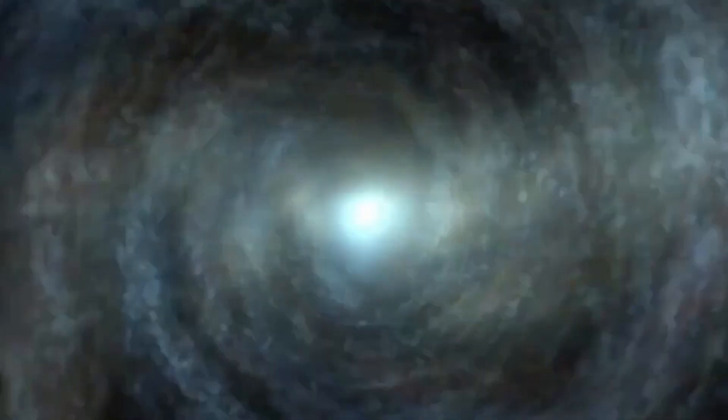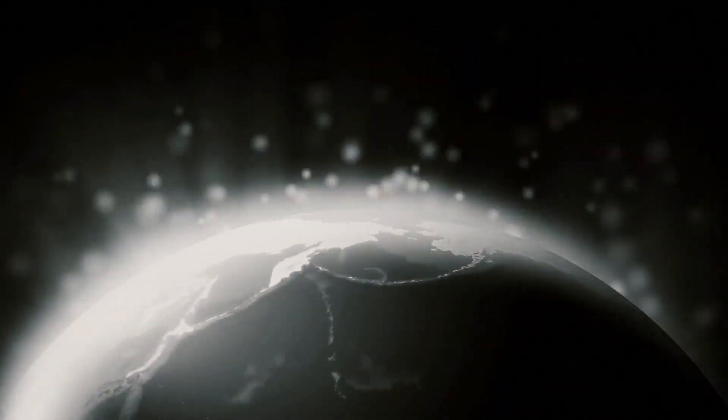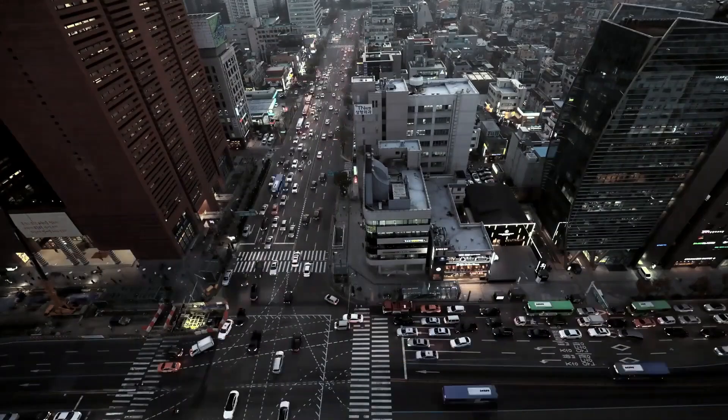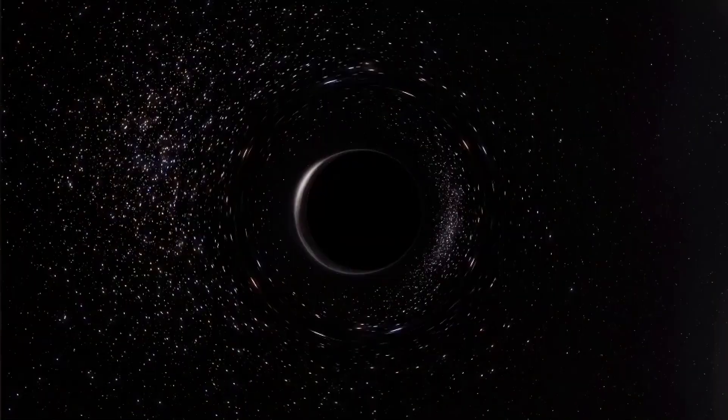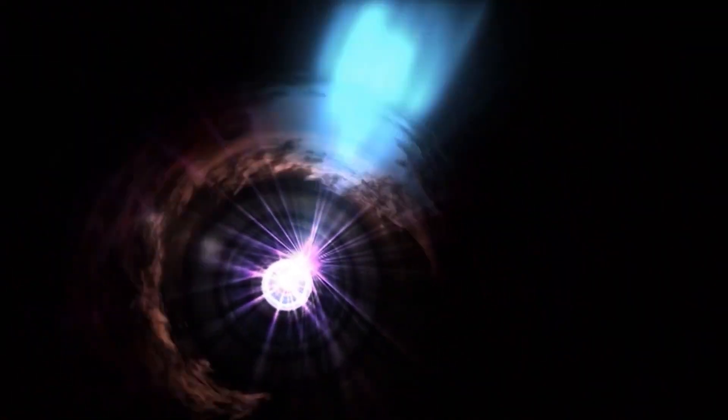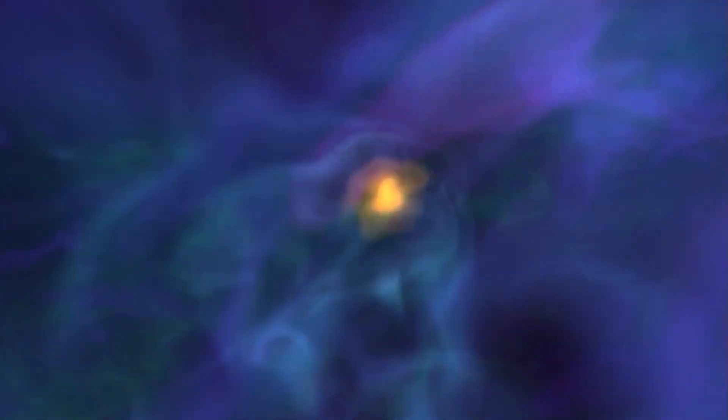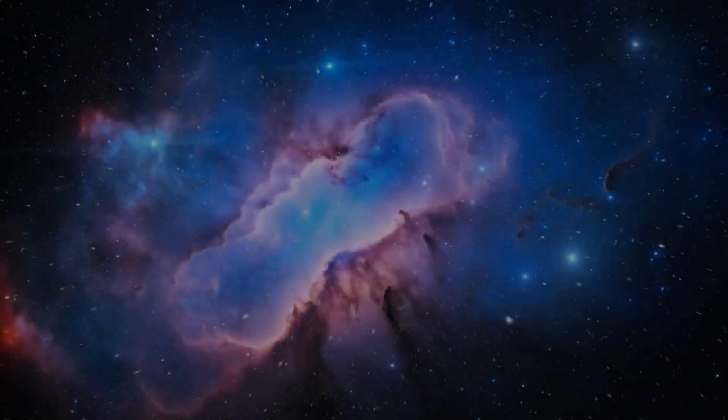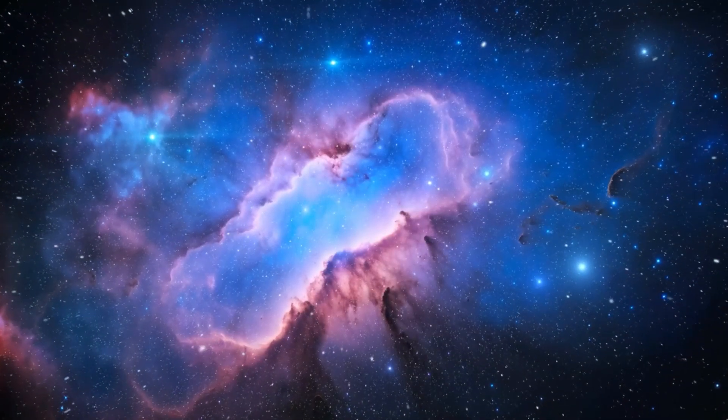One of the most famous examples of gravitational lensing is the Einstein cross, a quasar that appears as four distinct images arranged in a cross-like pattern around a central galaxy. This phenomenon occurs because the light from the quasar is bent by the gravitational field of the intervening galaxy, creating multiple images of the same object. The Einstein cross provides a striking visual example of the power of gravitational lensing and its ability to reveal objects that would otherwise be hidden from view.